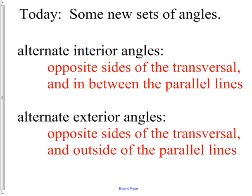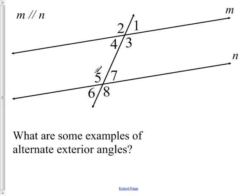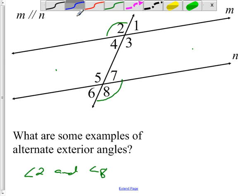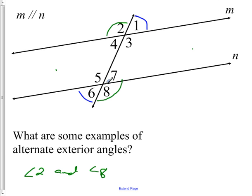Next, alternate exterior angles. These are on opposite sides of the transversal as well, but they're outside of the parallel lines. So one is on this side of the transversal and one is on the other side, and they're outside of the parallel lines. Examples would be angles two and eight, and also angles one and six. Those are the only two pairs of alternate exterior angles.